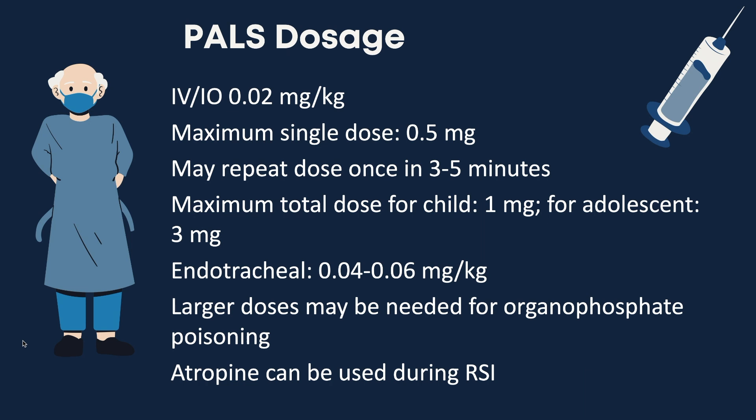Atropine can also be used for rapid sequence intubation. The IV dose is 0.01 to 0.02 milligrams per kilogram with a maximum dose of 0.05 milligrams. The IM dose for rapid sequence intubation is 0.02 milligrams per kilogram.